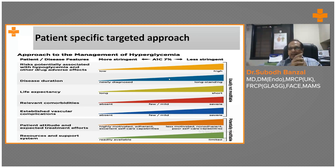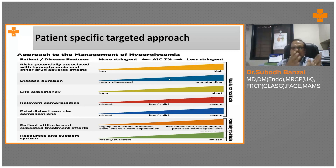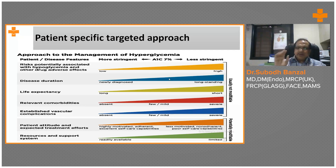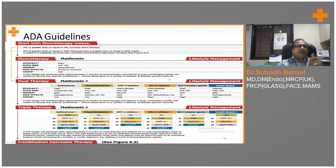This is how the patient-centric approach tells you how to deal with the patient with diabetes — how well you should control, and how you could be relaxed in the elderly with comorbidities and problems. You should be relaxed because you are not going to do good if you tightly control an 80-year-old patient on ESRD. A little relaxation is enough. This is what the patient-centric approach is, and these are the guidelines.